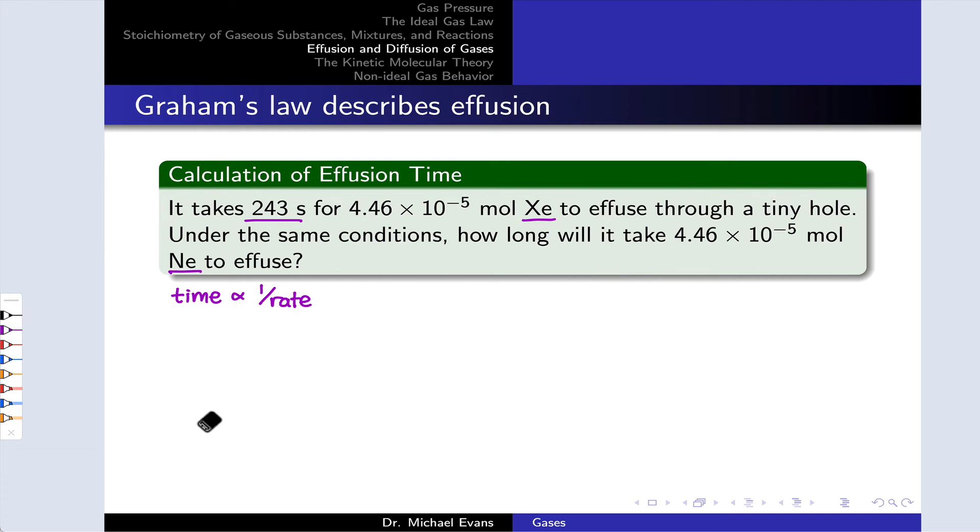So the time required for the neon to effuse divided by the time required for the xenon to effuse is equal to the square root of the molar mass of the neon divided by the molar mass of the xenon. Another way to think about this is one over the square root of the molar mass of xenon divided by the molar mass of neon. However you want to think about it mathematically, it's going to be equivalent to this.